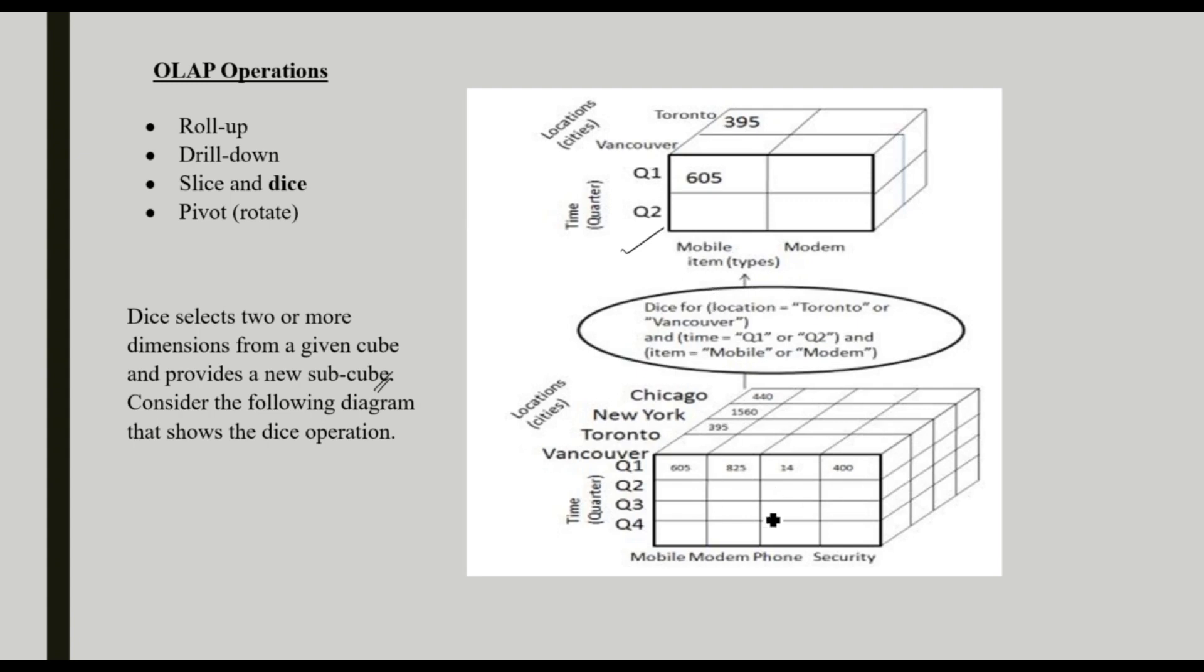We are dicing with the location Toronto or Vancouver and the time Q1 and Q2. We are discarding Q3 and Q4 and also discarding two more cities, Chicago and New York. So we are just dicing this small data cube. This is the result of the dice operation.